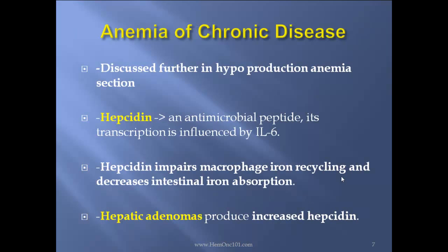Anemia of chronic disease will be discussed further in the hypoproduction anemia section, but the take-home is: hepcidin is an antimicrobial peptide whose transcription is influenced by IL-6. Hepcidin impairs macrophage iron recycling and decreases intestinal iron absorption. As a side note, hepatic adenoma also produces increased hepcidin, leading to anemia of chronic disease.